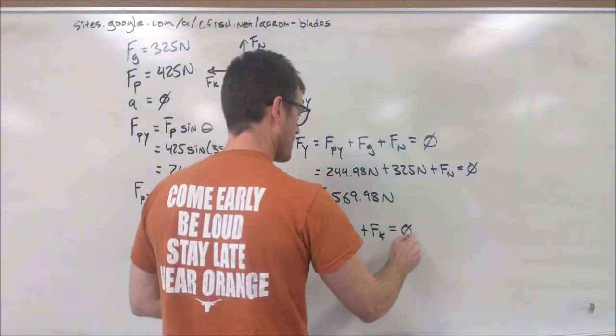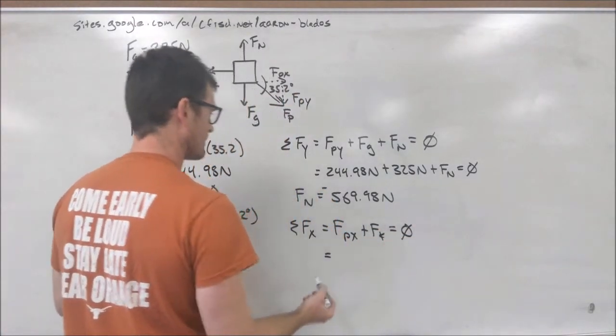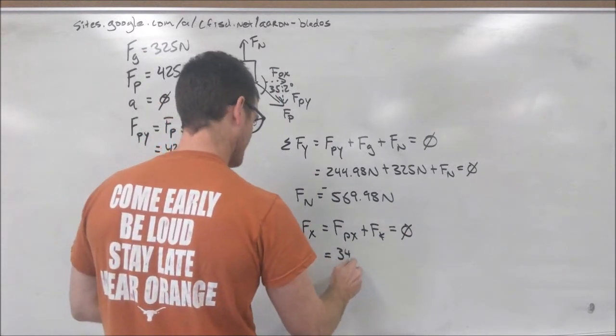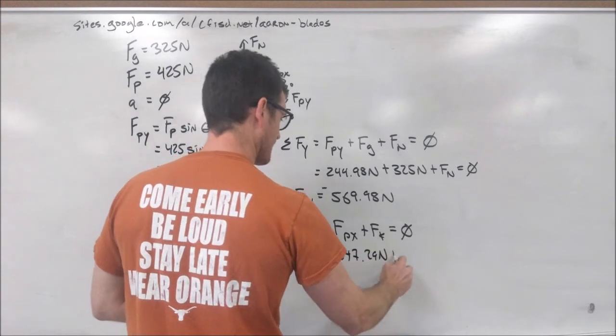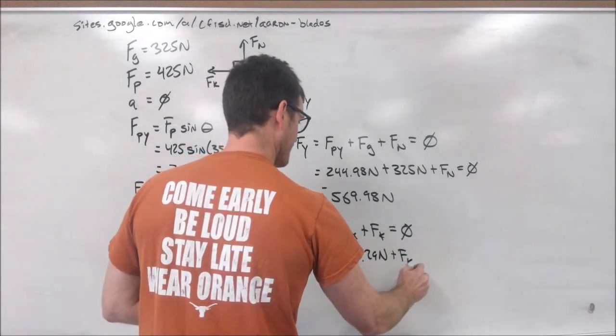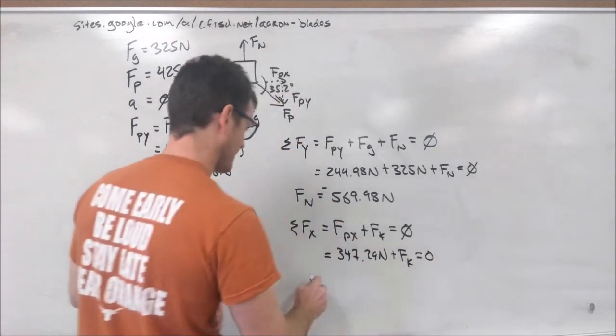Again, we were told this was at a constant velocity, so our acceleration is zero. We know the number for our Fpx, which is 347.29 newtons, which means it'll be perfectly balanced out by our force of friction.